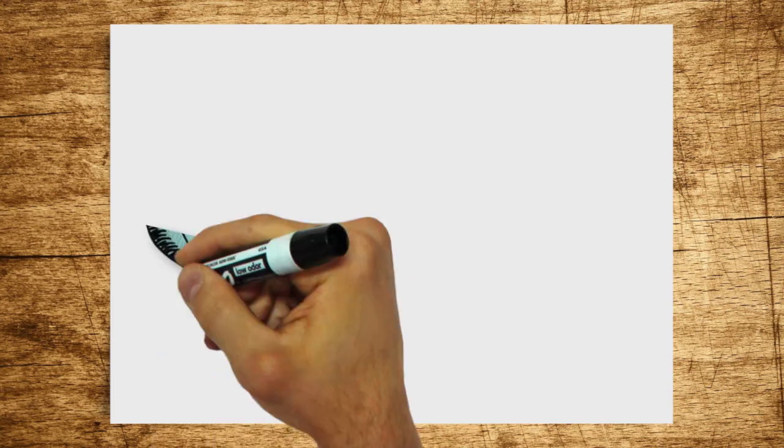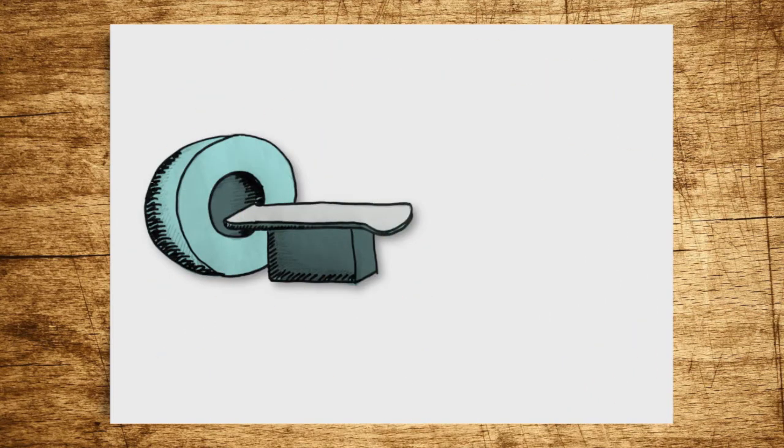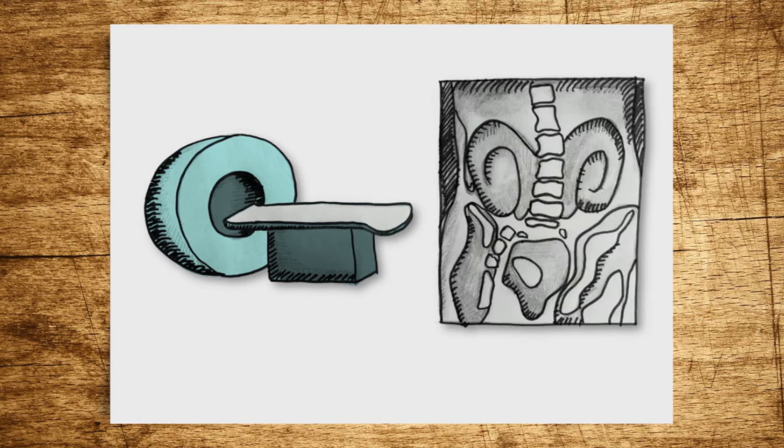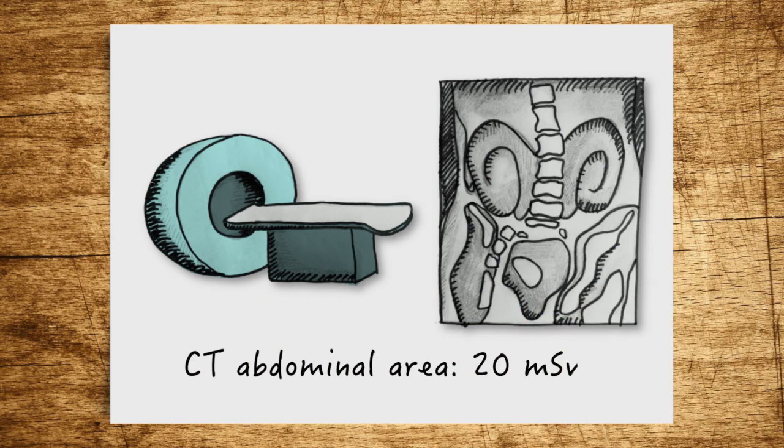In a computed tomography, or CT scan, many X-ray scans are combined so that the radiation exposure is higher, particularly for sensitive tissue. A CT of the abdominal area can deliver a dose of up to 20 millisievers.